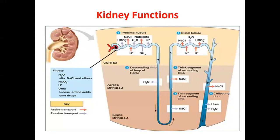Filtration at the glomerulus includes waste products, electrolytes, end products of metabolism, and drug metabolites. Some drugs are excreted unchanged, like the aminoglycosides. During the journey of the filtrate from the proximal convoluted tubule to the collecting duct, there will be reabsorption and active secretion of different substances.